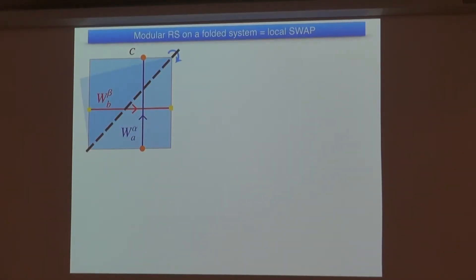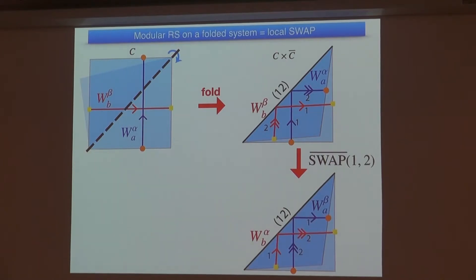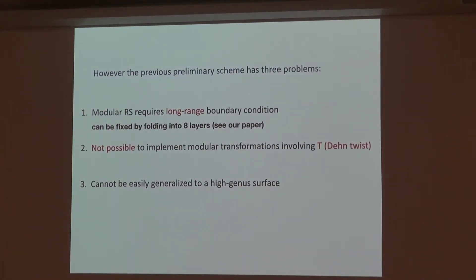There's a problem: this transformation is non-local—you need either reflection or rotation. But we can fix this by doing an origami on this system. A diagonal reflection becomes nothing but a transversal swap operation between two layers. It's a product of pairwise swaps between the layers. In this case, we can perform the previous transformation, exchanging the two cycles just by a transversal operation. However, there is still a problem: to make this torus, we need a long-range boundary condition. And we don't know how to make a Dehn twist or how to generalize to a high-genus surface.